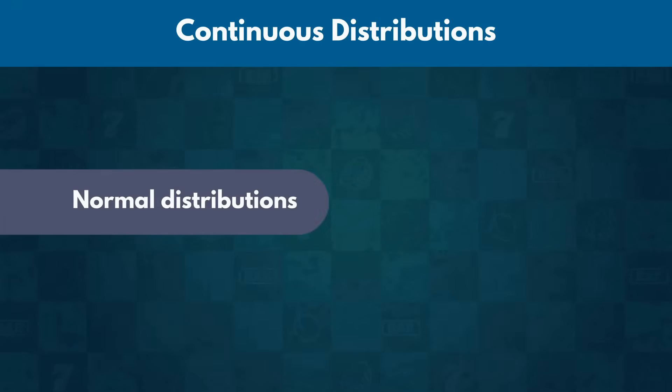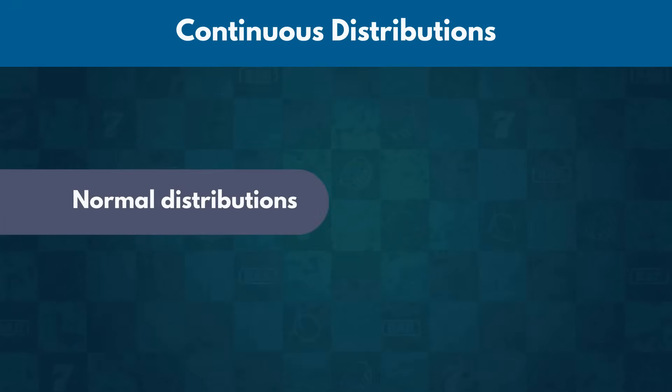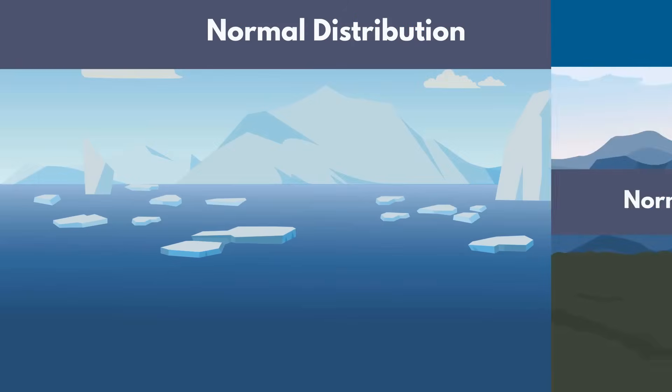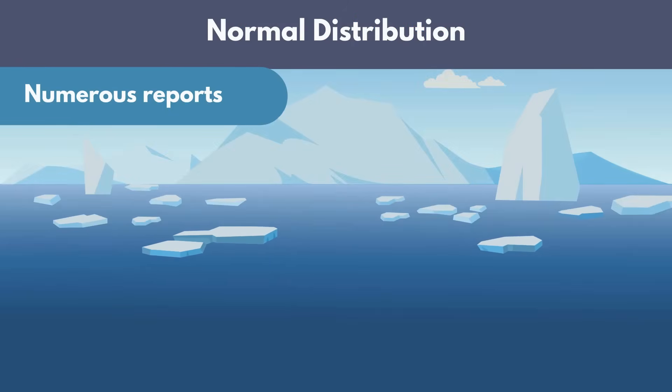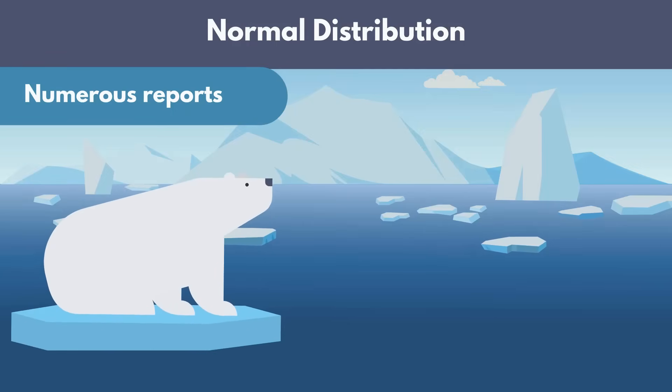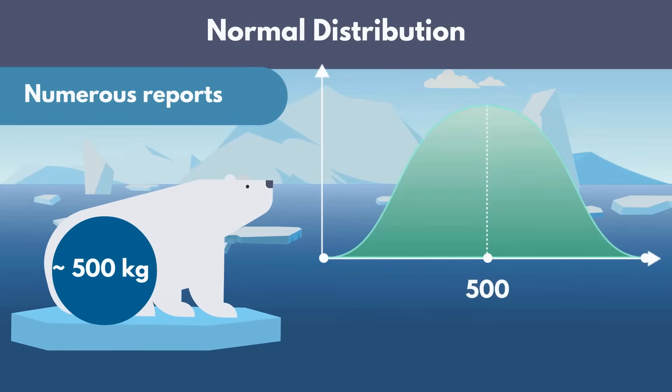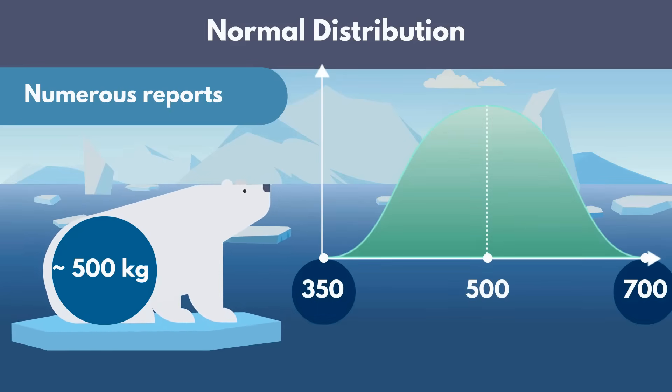The first one we will talk about is the Normal distribution. The outcomes of many events in nature closely resemble this distribution, hence the name Normal. For instance, according to numerous reports throughout the last few decades, the weight of an adult male polar bear is usually around 500 kilograms. However, there have been records of individual species weighing anywhere between 350 kilograms and 700 kilograms.